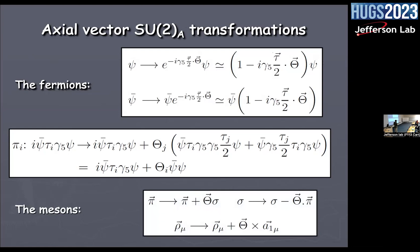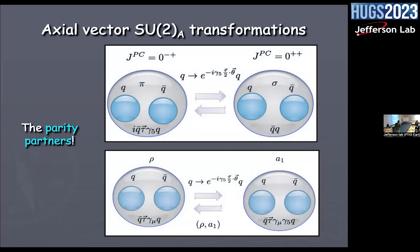If I do the same axial transformation on the vector particle rho, it transforms into an axial vector. So under axial transformation, a vector particle gets converted into an axial vector, and a pseudoscalar gets converted to a scalar. A pion transformed by the axial rotation gives a sigma, and vice versa; a rho transforms to a1 and back.